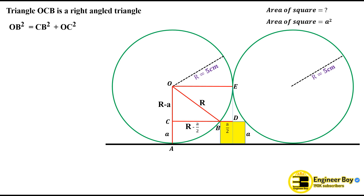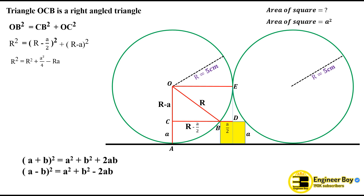We can put these values into the Pythagorean theorem: OB² = r², CB² = (r − a/2)², and OC² = (r − a)². Expanding: r² = r² + a²/4 − ra + r² + a² − 2ra.